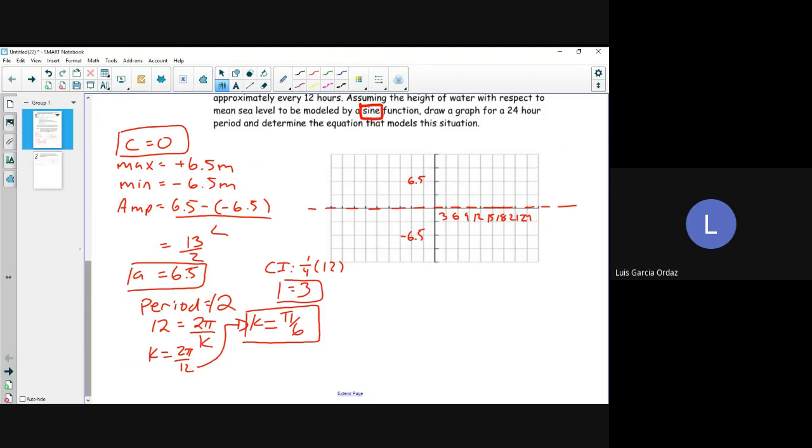So what would our sine function look like based off the information that we are given? What would our equation be? y is equal to 6.5 sine of pi over 6x.